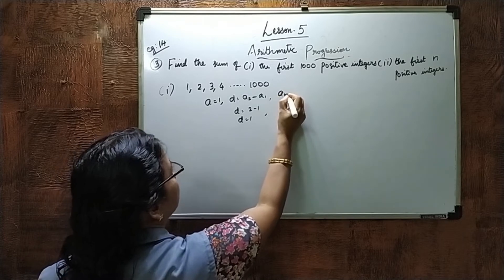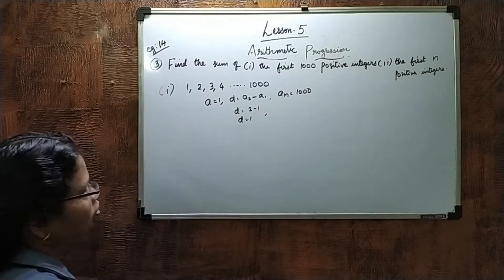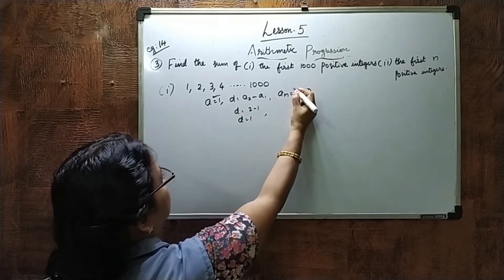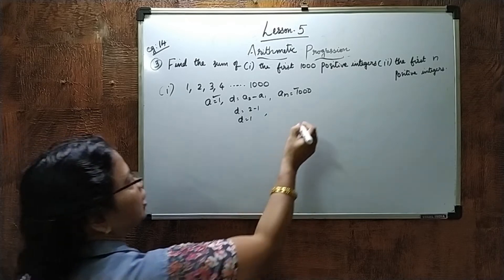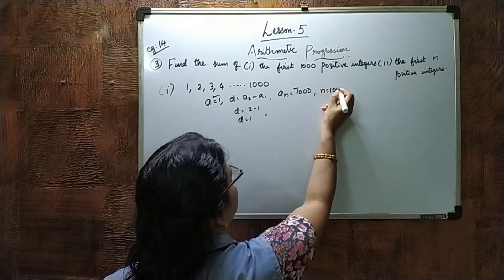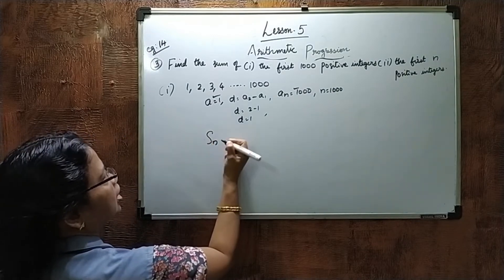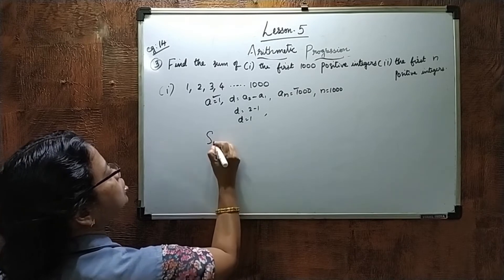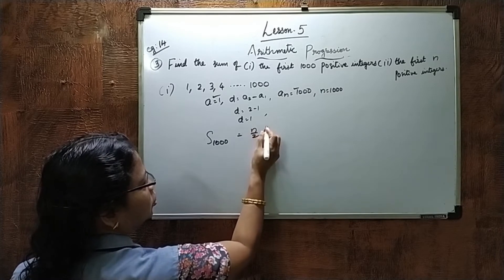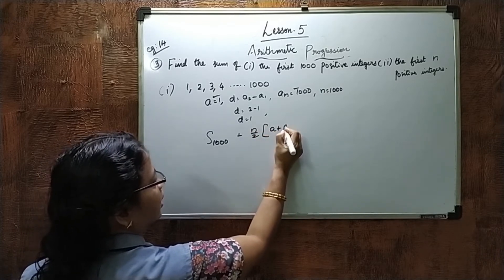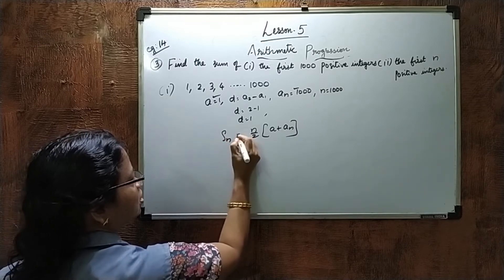The last term An equals 1000. N is 1000 terms, so N equals 1000. We can use the easier formula: S1000 equals N by 2 into A plus An, which is 1000 divided by 2 into 1 plus 1000.